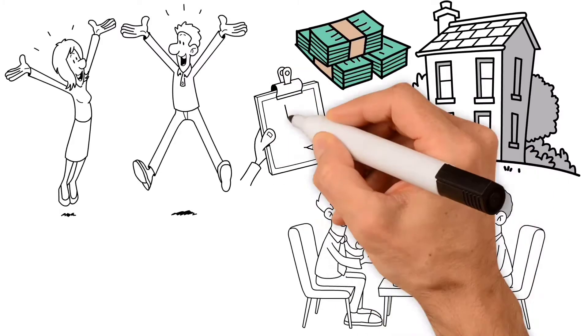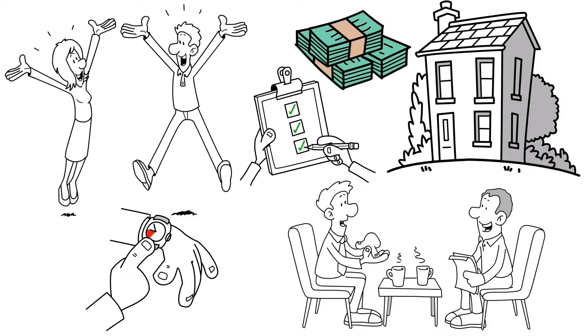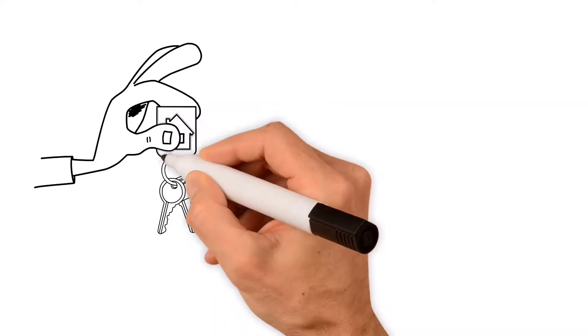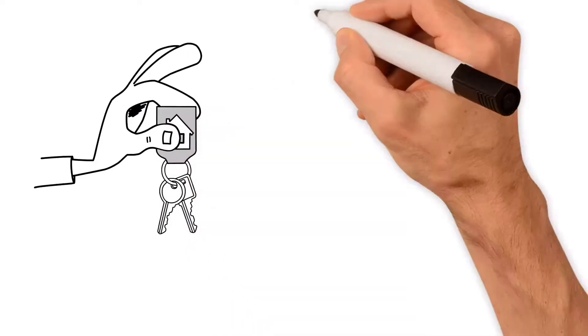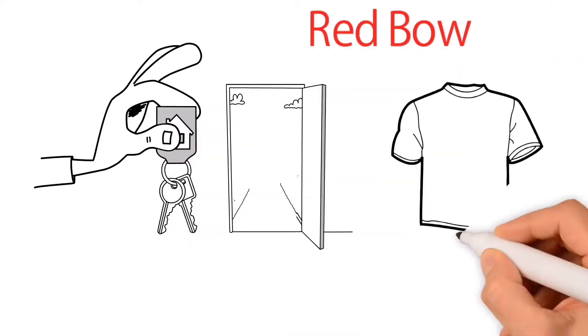They had done it: gotten a loan, found a property, negotiated a win-win contract, met all of their responsibilities, and closed their new home on time. They got their new home keys from Hermione on closing day.